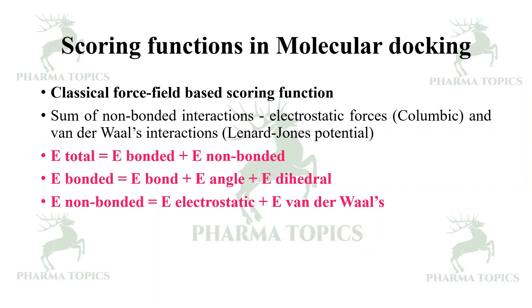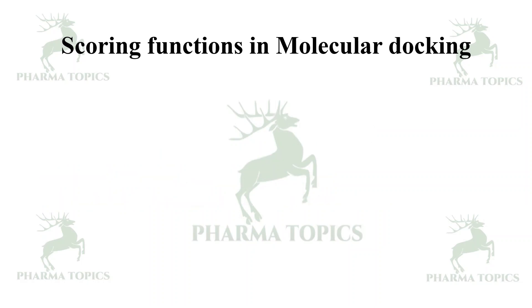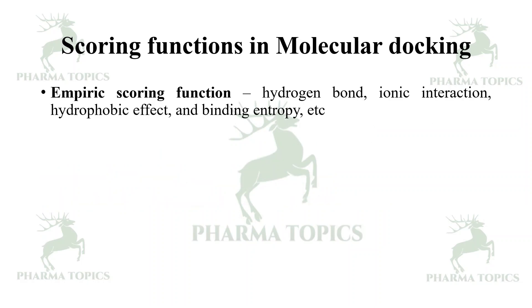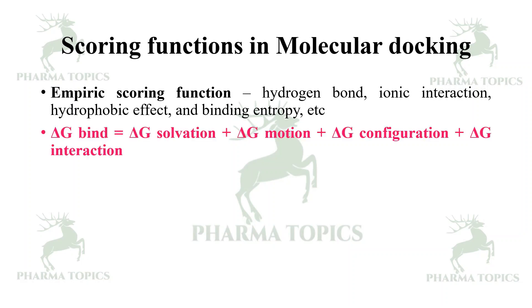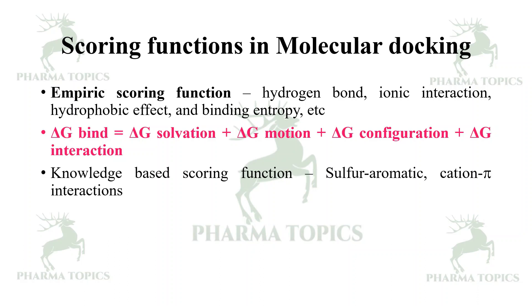The empirical scoring function includes hydrogen bond, ionic interaction, hydrophobic effect, and binding entropy. Delta G_bind = delta G_solvation + delta G_motion + delta G_configuration + delta G_interaction — all these energies put together form the scoring function. The knowledge-based scoring function includes sulfur-aromatic combinations and cation-pi interactions.